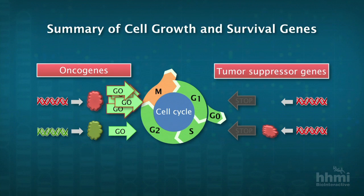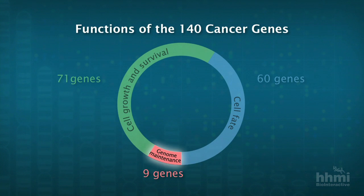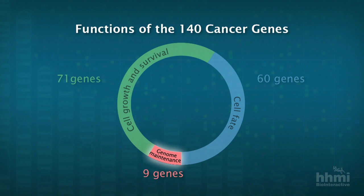What about the category at the bottom — genome maintenance? There are nine genes we've put into that category. When DNA is replicated in a normal cell, DNA polymerase is a really good enzyme, but it's not perfect, and mistakes are made — about one per every billion bases.